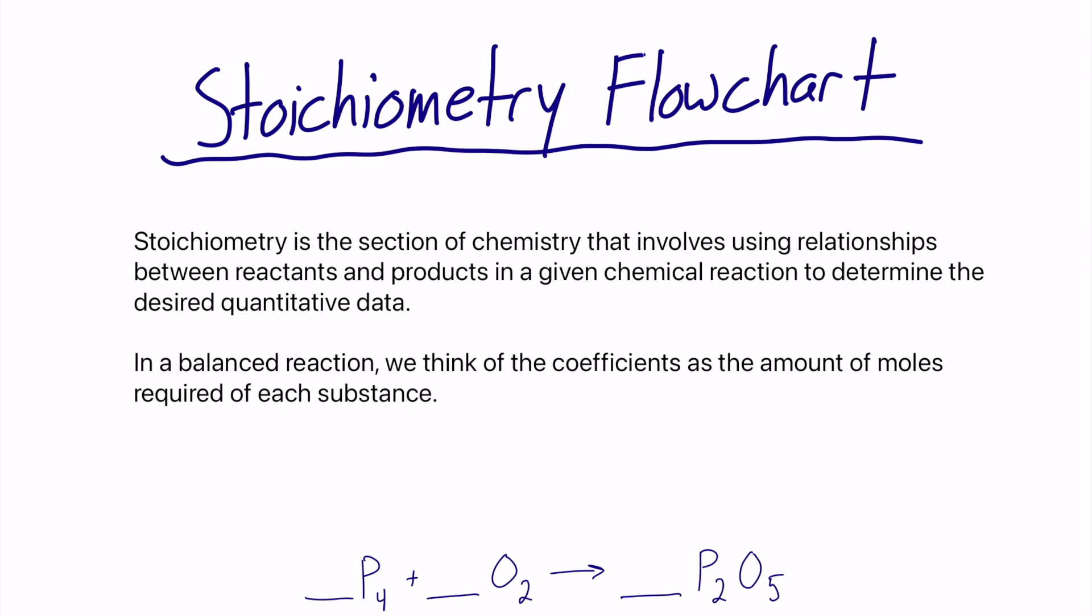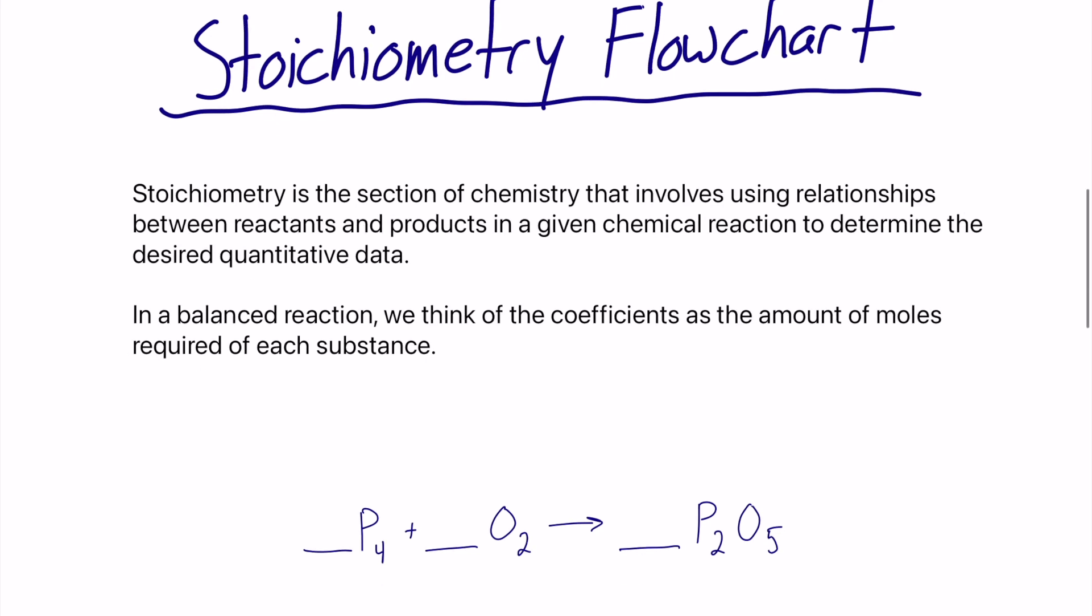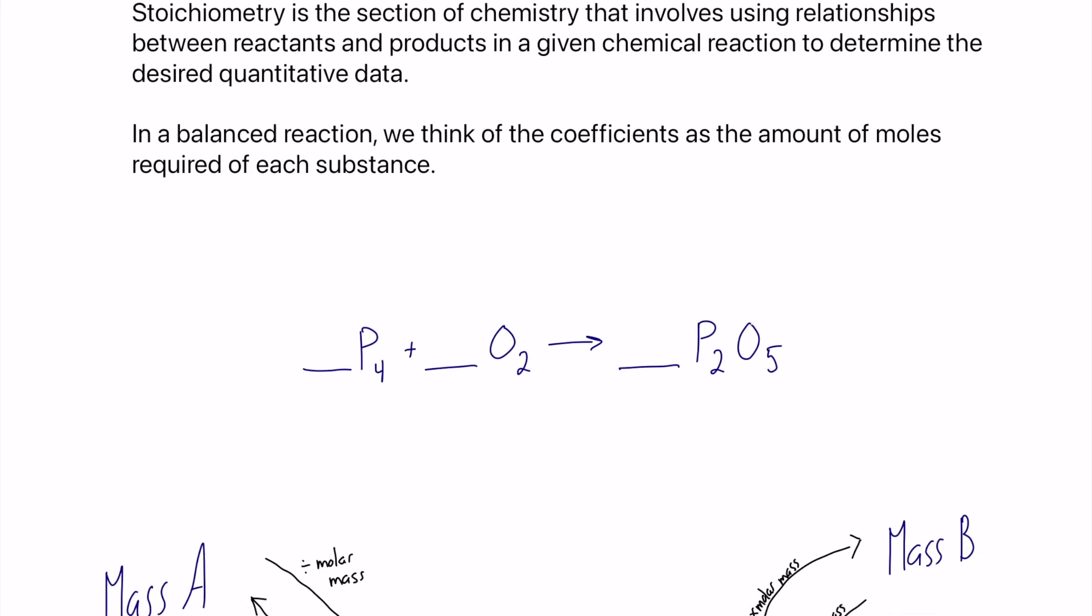In a balanced reaction, we think of the coefficients as the amount of moles required in each substance. Right here we do have one reaction. It's not balanced yet, but let's just go ahead and quickly balance it. We'll have 1 P4, we will have 2 P2O5, which means we should have 5 O2.